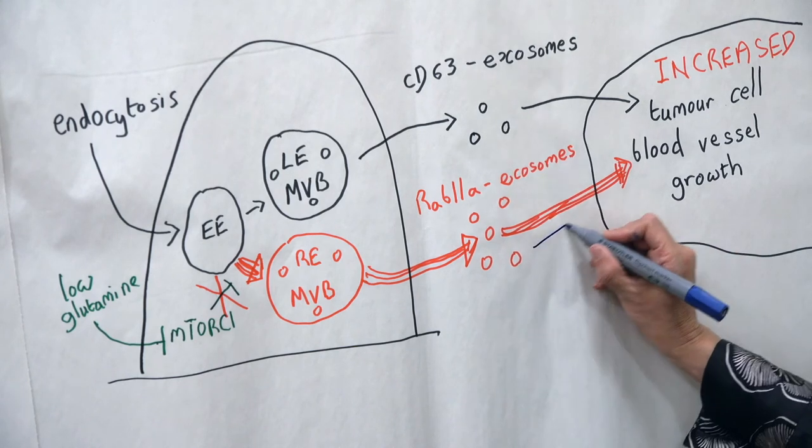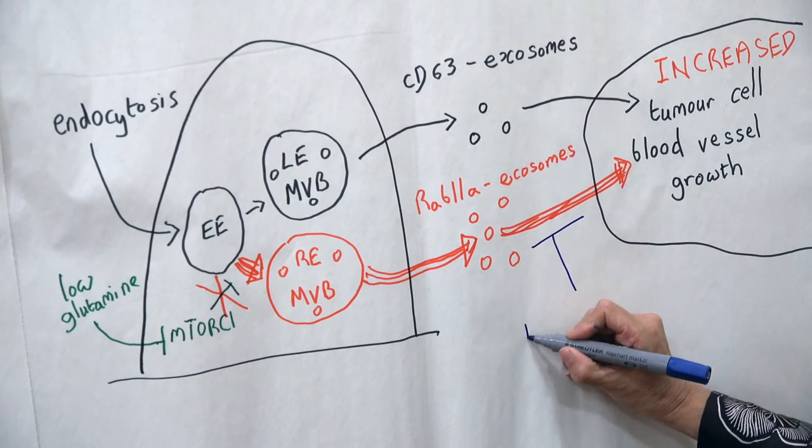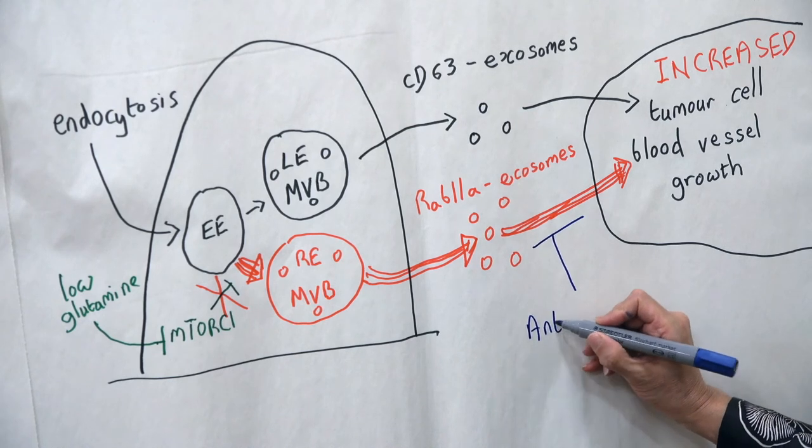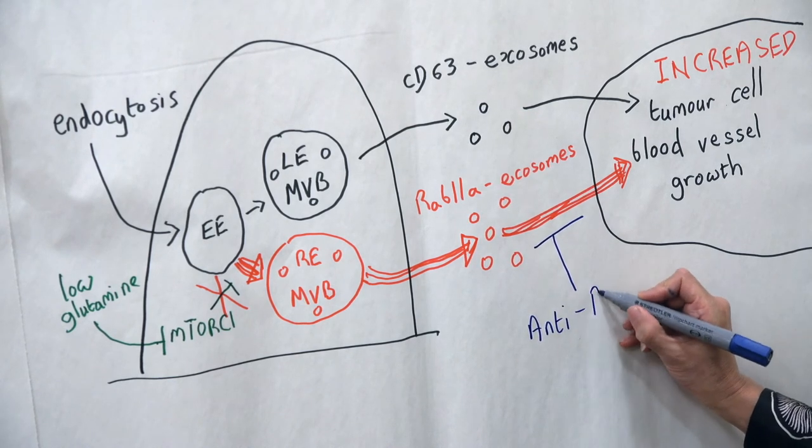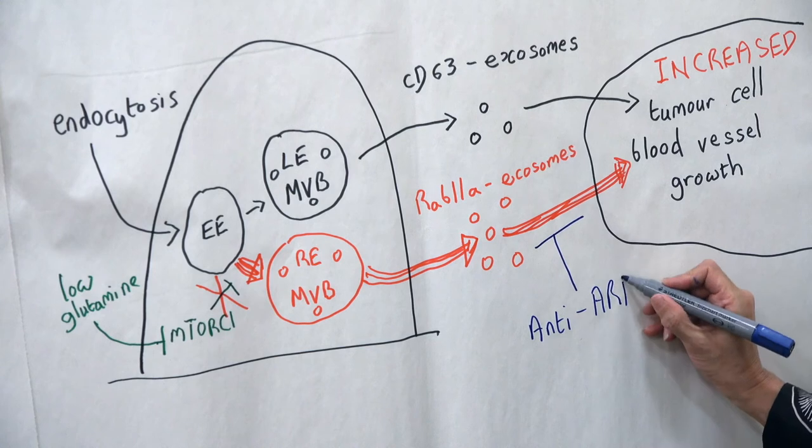The growth-promoting activity is blocked by neutralizing antibodies against the EGFR ligand, amphiregulin, which is increased in levels in these vesicles.